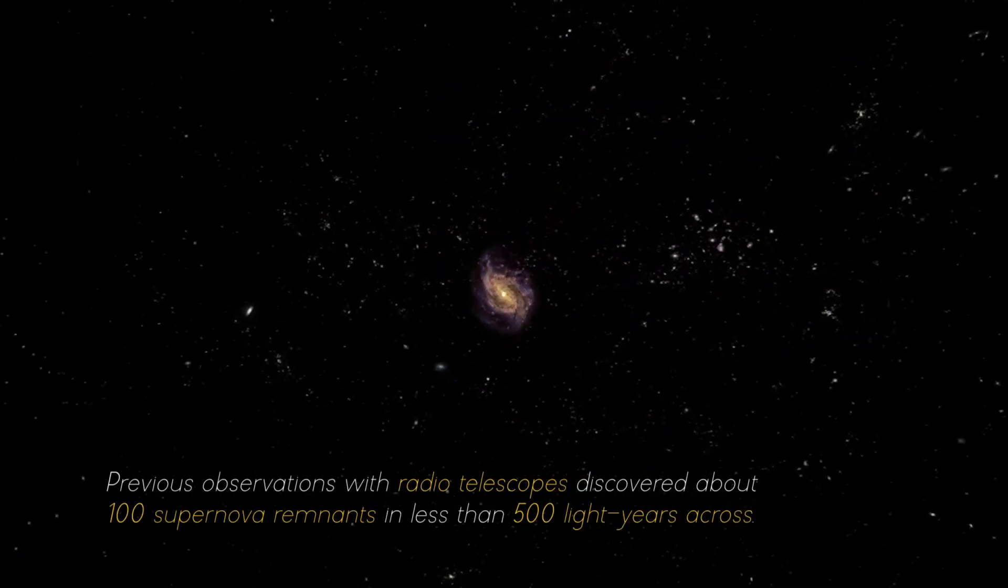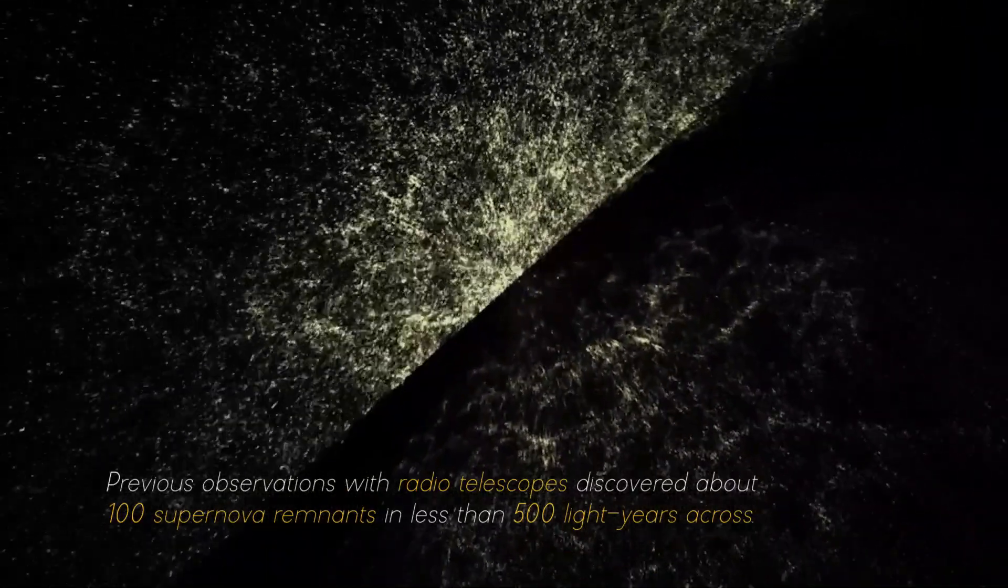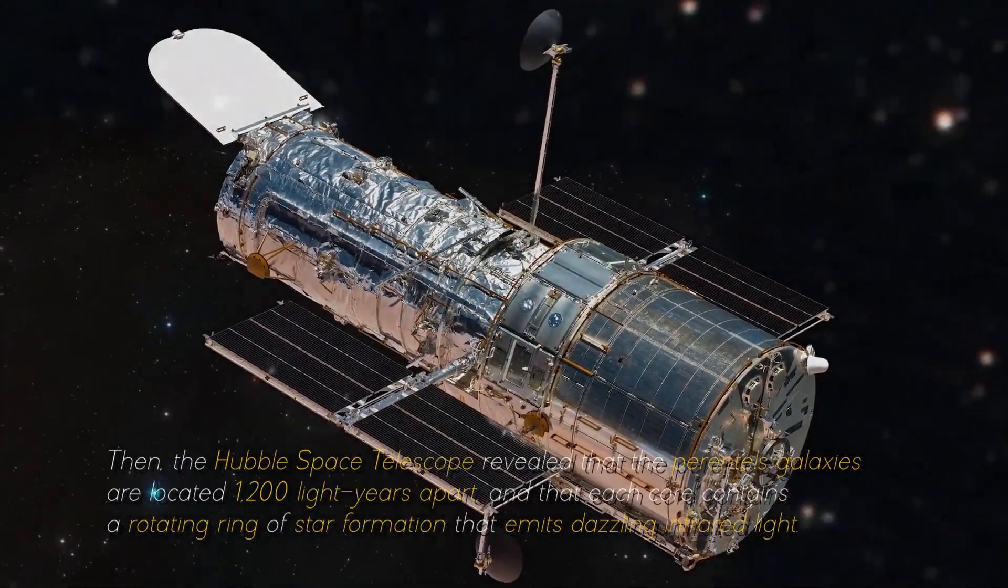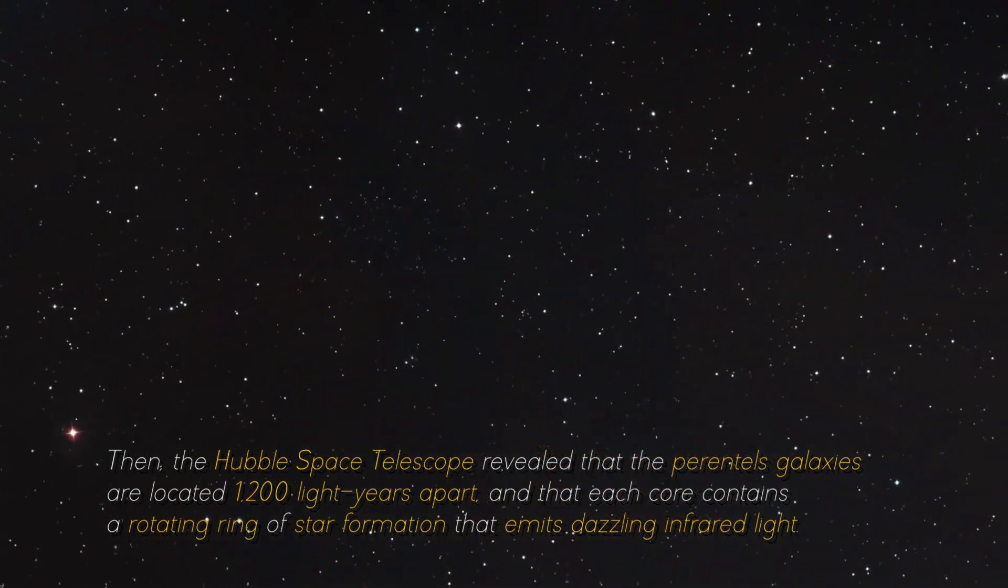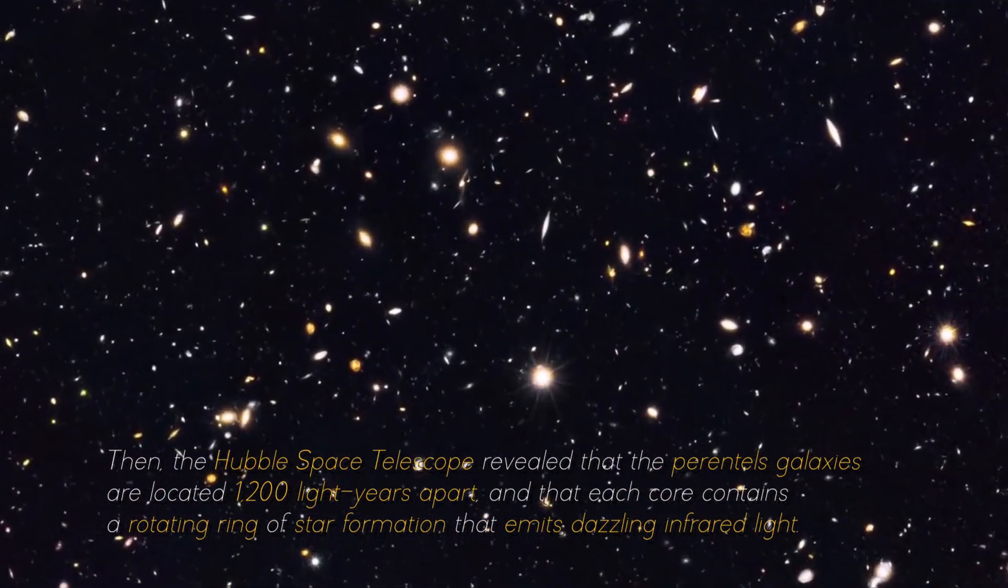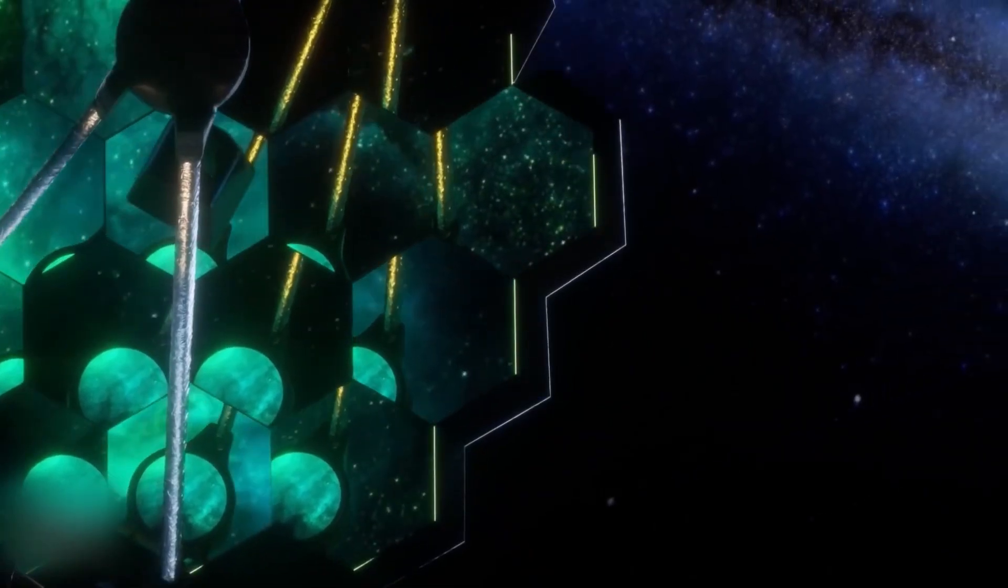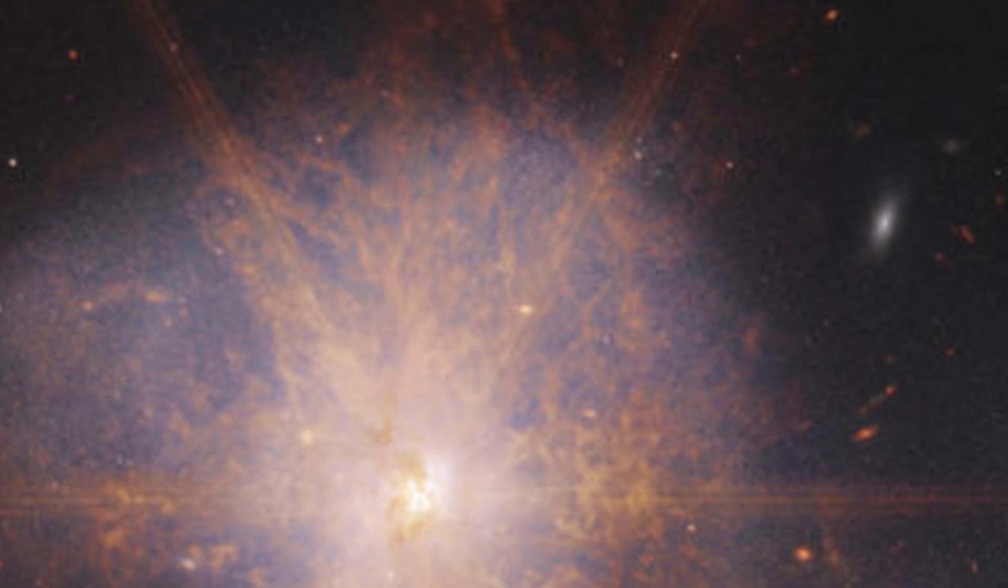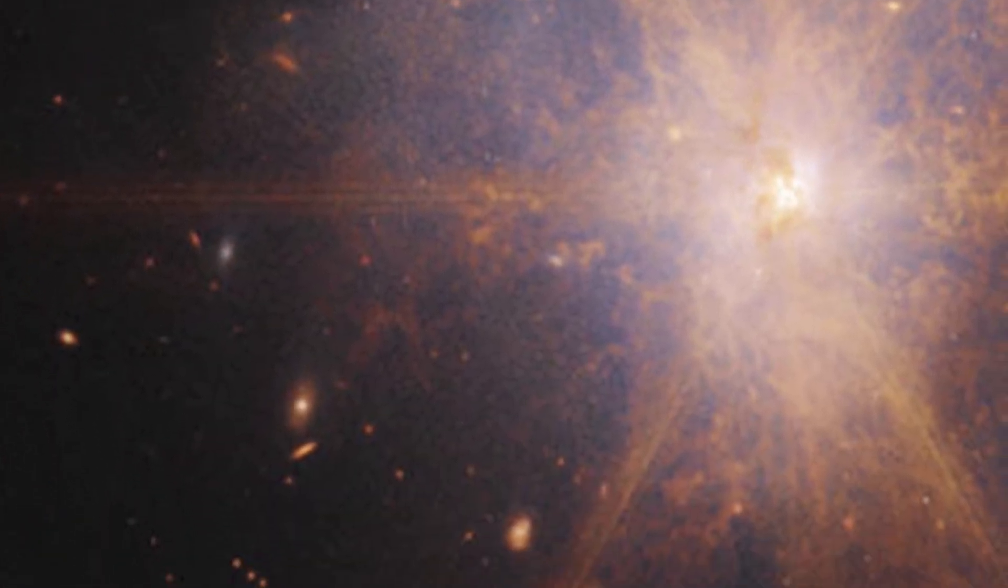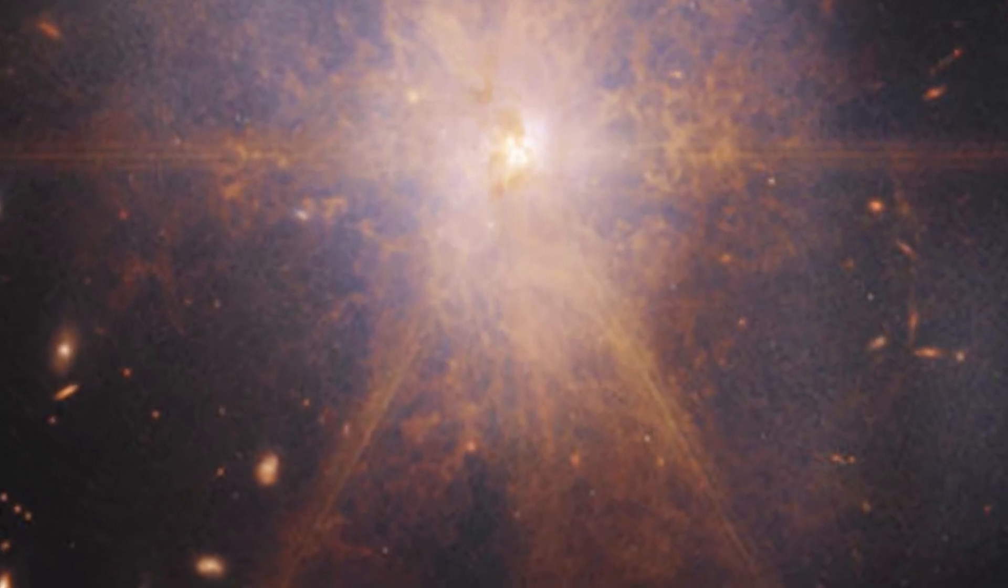Previous observations with radio telescopes discovered about 100 supernova remnants in less than 500 light years across. Then, the Hubble Space Telescope revealed that the parental galaxies are located 1,200 light years apart, and that each core contains a rotating ring of star formation that emits dazzling infrared light. This latest view from the James Webb Space Telescope shows an impressive galactic merger of the two galaxies. This image also shows faint tidal tails extending from the outskirts of the merger, indicating the gravitational pull between the two galaxies. Finally, the reddish and orange streams and filaments represent scattered organic materials in ARP 220.